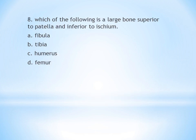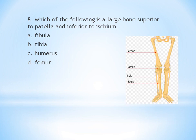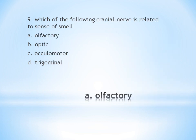Eighth question: Which is the largest bone? A. Fibula, B. Tibia, C. Humerus, D. Femur. Answer is D, femur.